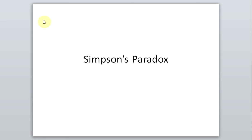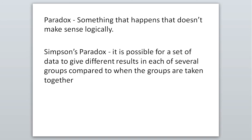In this video we're going to talk about Simpson's paradox, which is something odd that can happen when you look at data. A paradox is something that doesn't make sense logically, and in math, Simpson's paradox means it's possible for a set of data to give different results in each of several groups compared to what happens when the groups are taken together. When you look at data in some ways you get one result, but when you look at it all combined you get a different result that doesn't quite make sense.